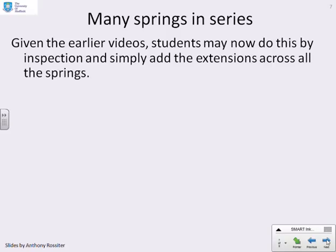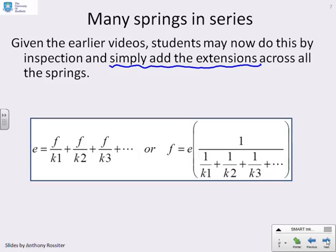What happens then if we have many springs in series? Now given this is quite a late video in this sequence and students will have seen this trick many times before, hopefully it's obvious that all we need to do is add the extensions for all of the springs. So what we're going to do is say the total expansion is the extension of spring one plus the extension of spring two plus the extension of spring three and so on, which gives you this model here.